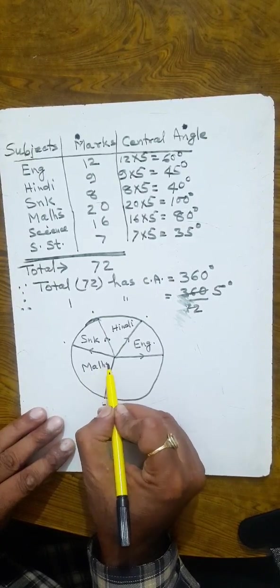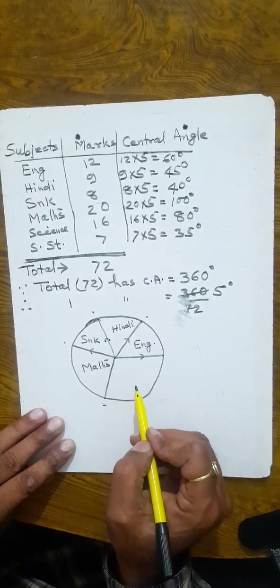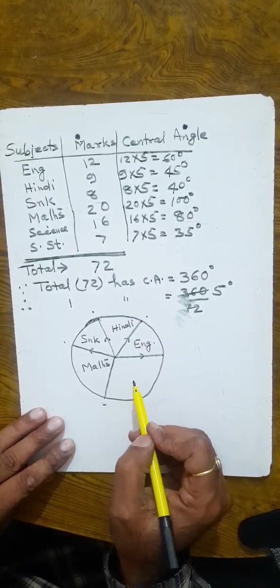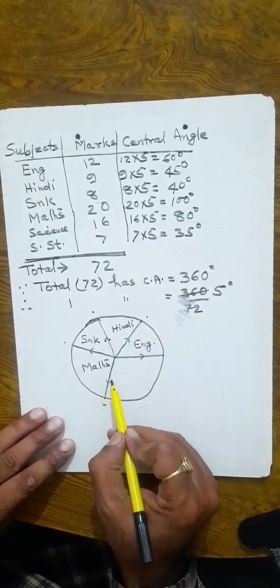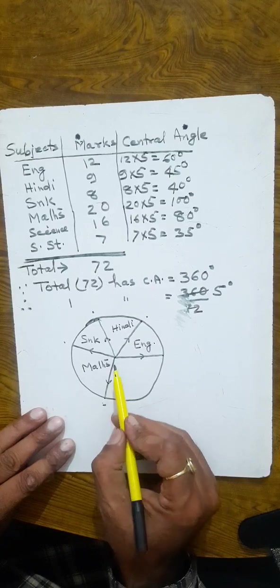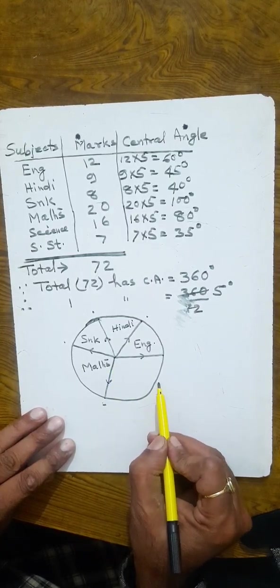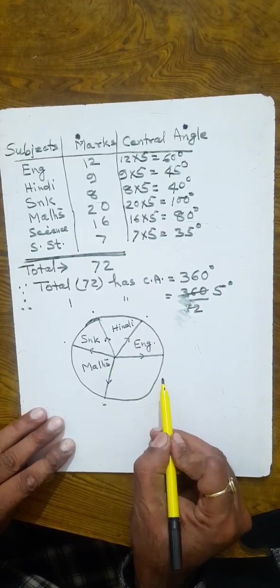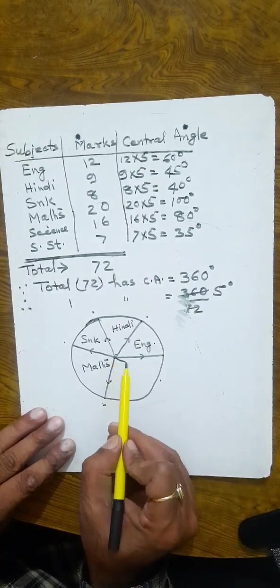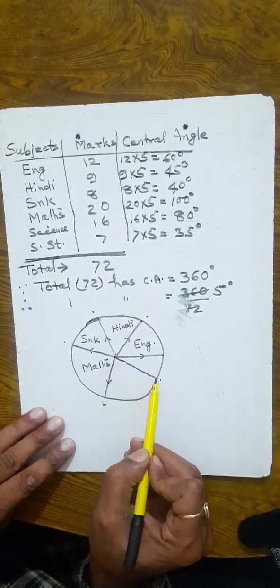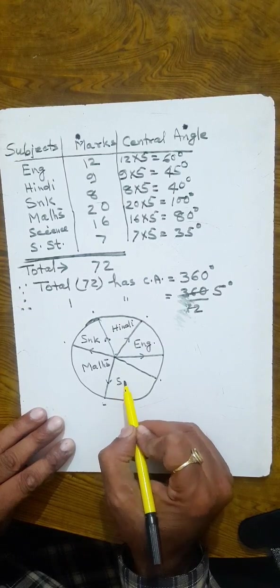Using the protractor, mark the next 80 degree angle from the current radius. Draw the line to the center to form an 80 degree angle. This section is Science.